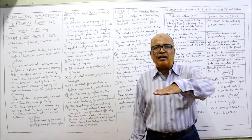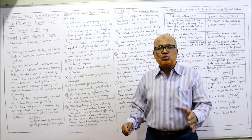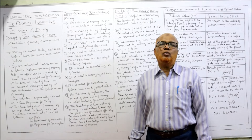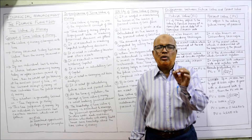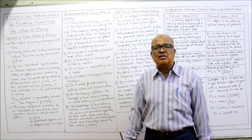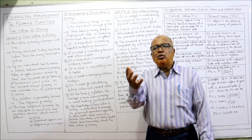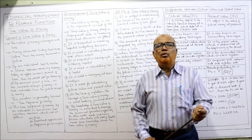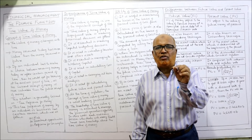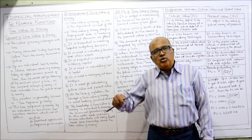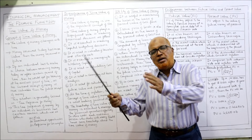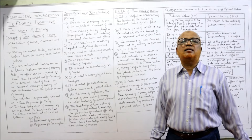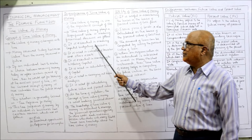Present money and future money cannot be directly compared. If you want to compare the height of two persons, both should stand on the same platform. Similarly, if you want to compare cash inflows and cash outflows, both must have the same purchasing power of money. Since future cash inflows occur in future, we cannot compare them directly with the cash outflow — we have to consider the time value of money to take the capital budgeting decision.